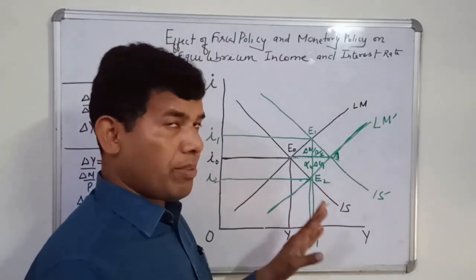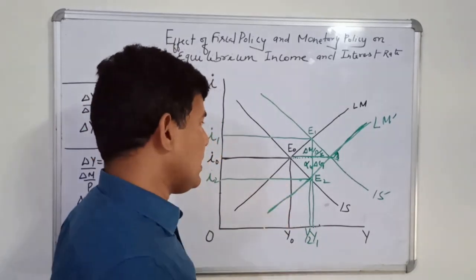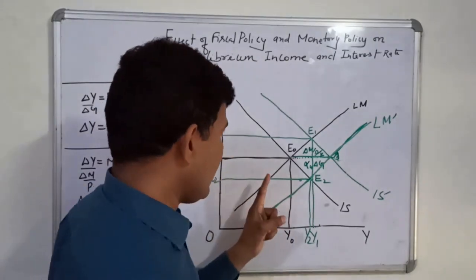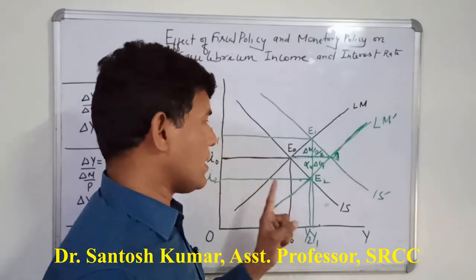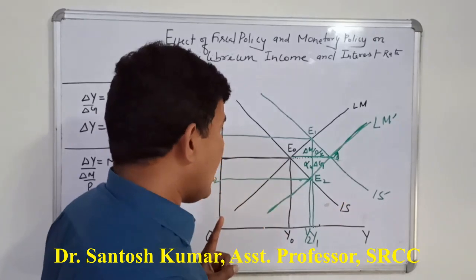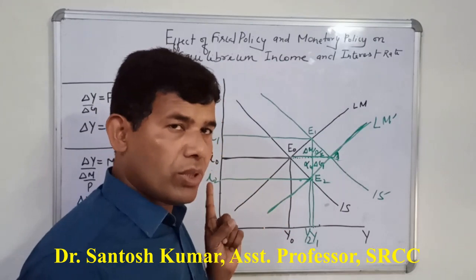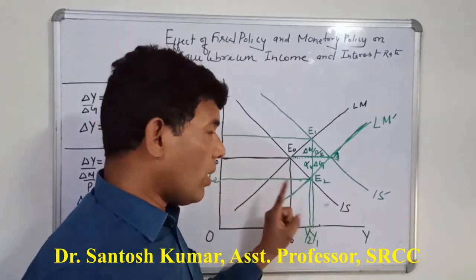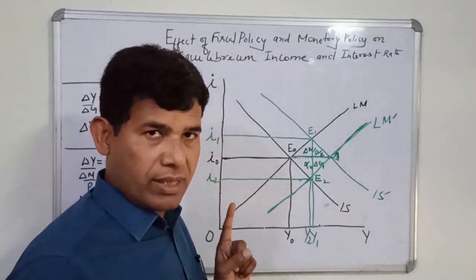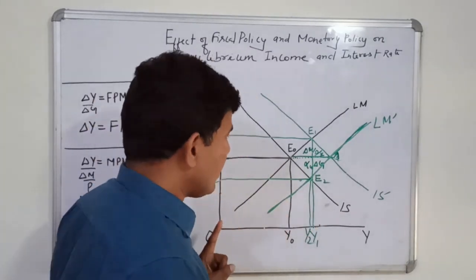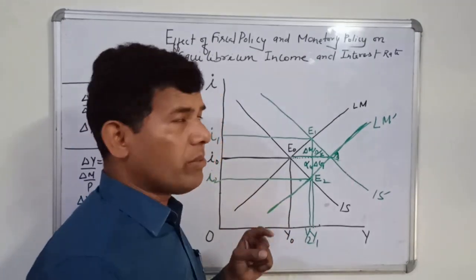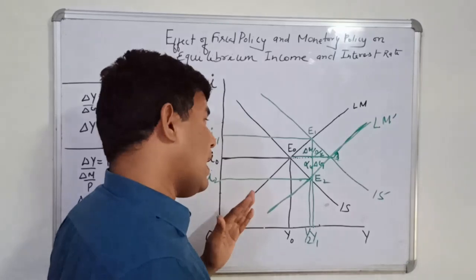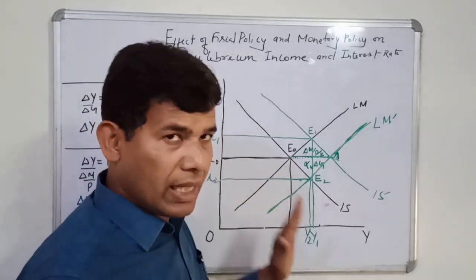So this is the effect of expansionary fiscal policy and expansionary monetary policy — how they affect the equilibrium level of income and interest rate. To summarize: when we follow expansionary fiscal policy, equilibrium level of output rises, and when we follow contractionary fiscal policy, equilibrium level of output falls. However, rise in output due to expansionary fiscal policy is accompanied by rise in rate of interest, and fall in output due to contractionary fiscal policy leads to fall in rate of interest. Similarly, when expansionary monetary policy is followed, that leads to rise in output due to falling interest rate, and when contractionary monetary policy is followed, that leads to rise in interest rate and falling output.